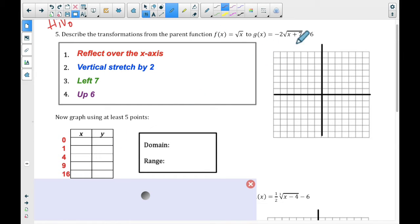Well, how do we get that? To get a 0, you would have to plug in a negative 7, right? Because a negative 7 plus 7 is going to be 0. So to get a 1, you would plug in a negative 6, because negative 6 plus 7 is 1. To get a 4, you would plug in a negative 3. To get a 9, you would plug in 2. And to get a 16, you would plug in 9, because 9 plus 7 is 16.